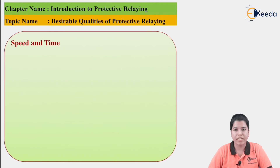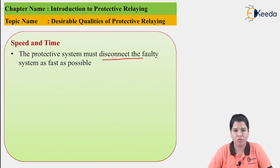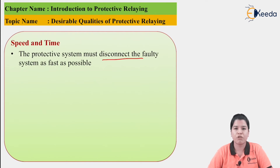Next is Speed and Time. The speed of operation should be high whereas the time required for operation should be low. The protective system must disconnect the faulty system as fast as possible. If this does not happen, the fault will spread to the remaining system and a large amount of the system will get damaged. The protective system should clear the fault as early as possible.